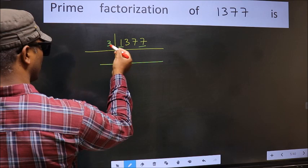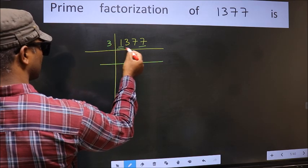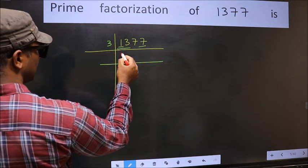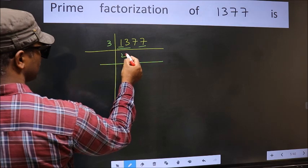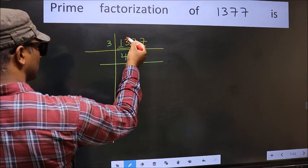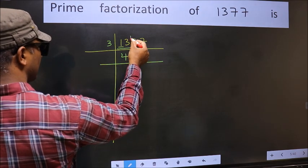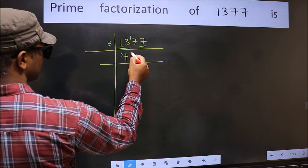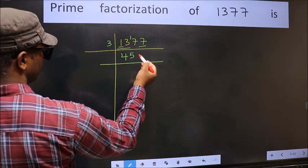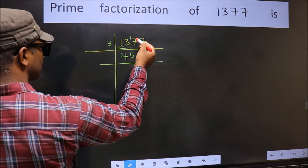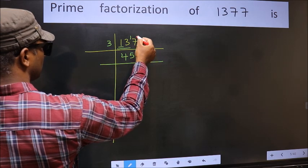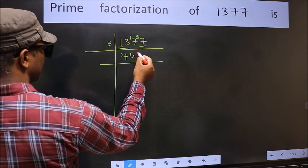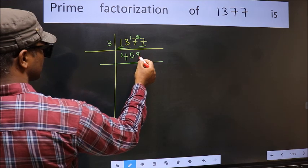First number 1 is smaller than 3, so take 2 numbers: 13. A number close to 13 in the 3 table is 3 fours, 12. 13 minus 12 is 1; 1 carried forward gives 17. A number close to 17 in the 3 table is 3 fives, 15. 17 minus 15 is 2; 2 carried forward gives 27. We get 27 in the 3 table as 3 nines, 27.